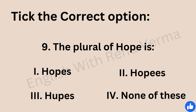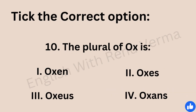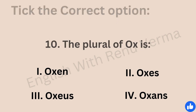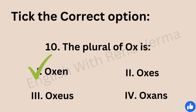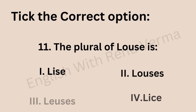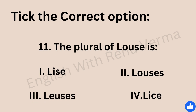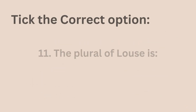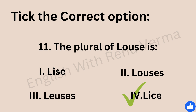The plural of 'hope' — options are hops, hoppies, hoops, or none of these. The correct answer is 'hopes'. Next, the plural of 'ox' — oxen, oxes, oxias, or oxens. The correct answer is 'oxen'. The plural of 'louse' — lice, louses, loses, or lice. Just like mouse becomes mice, louse becomes 'lice'.